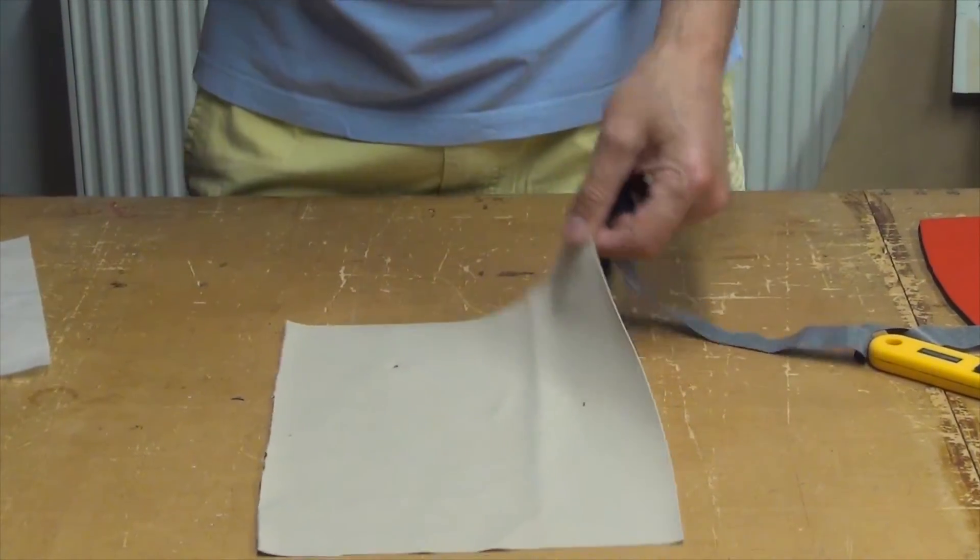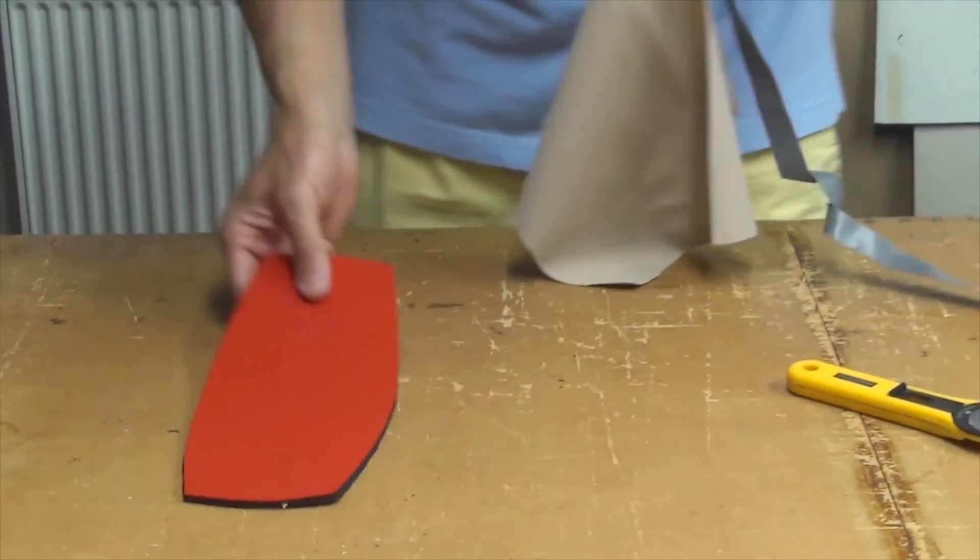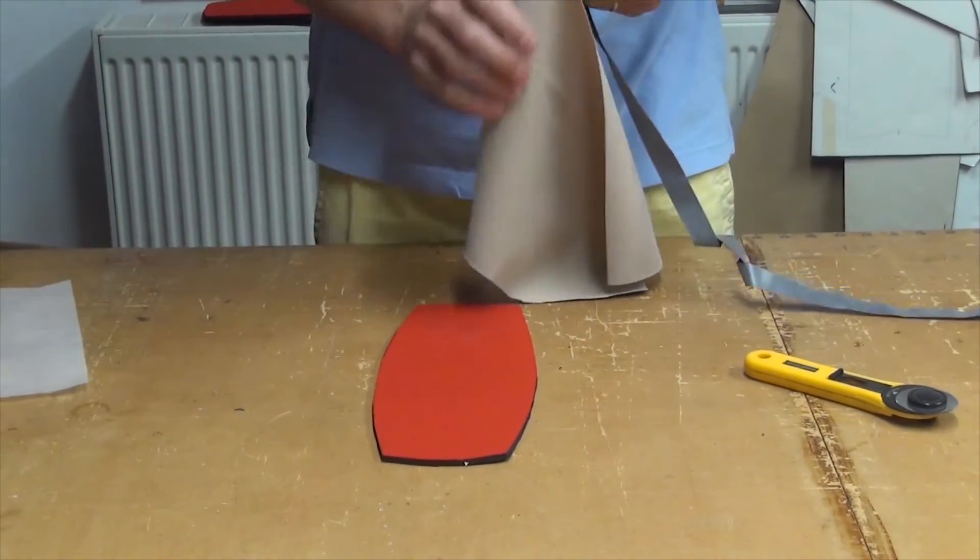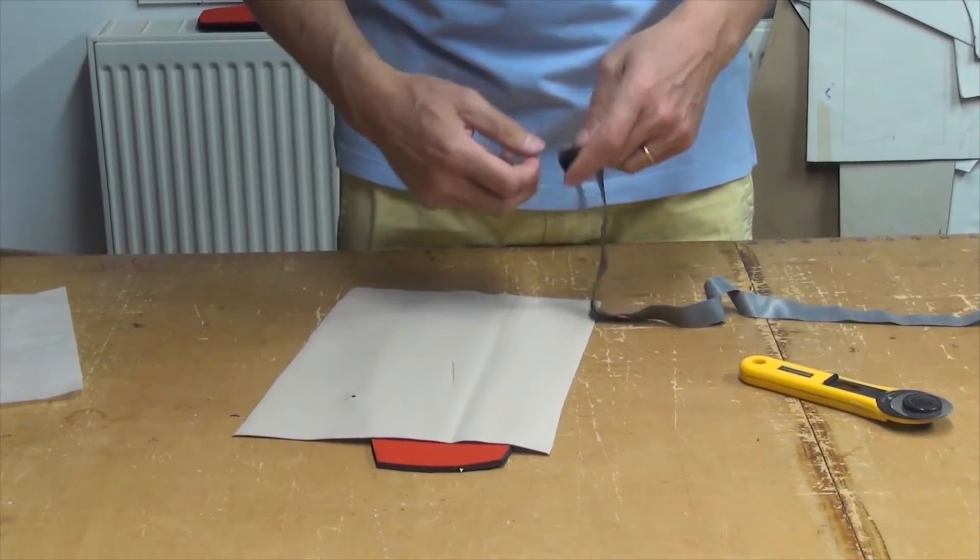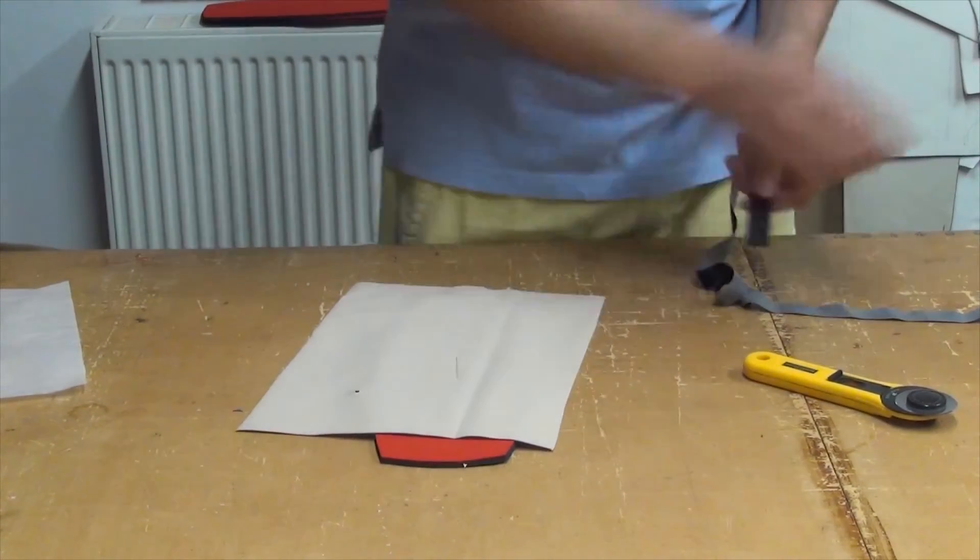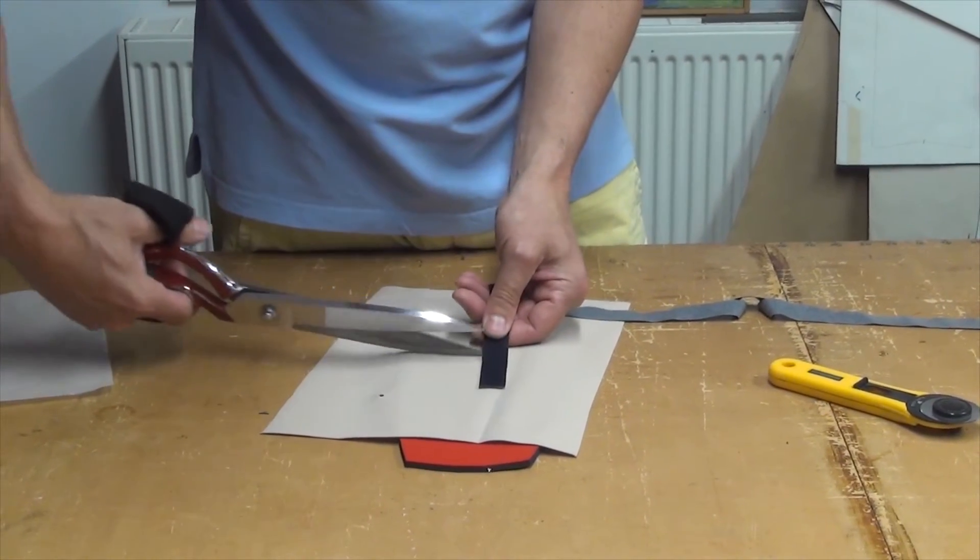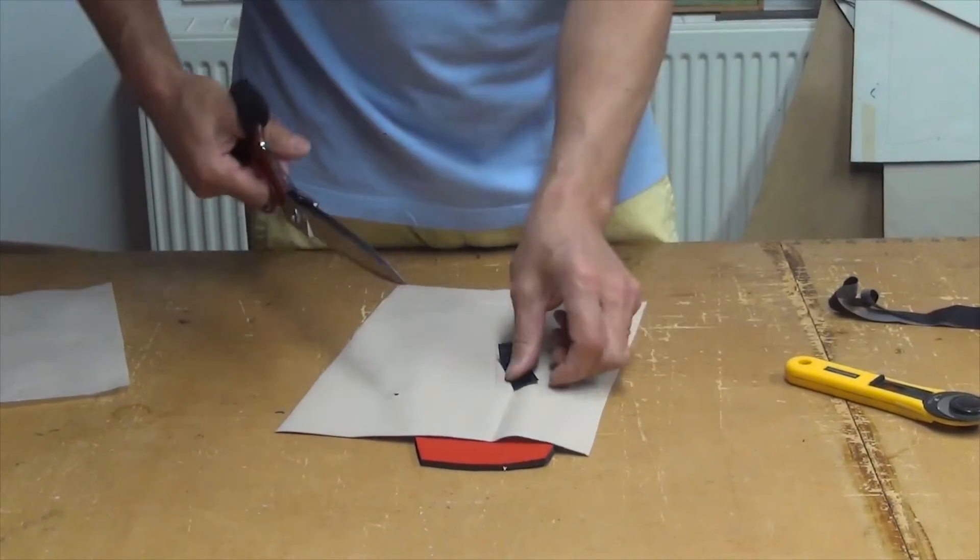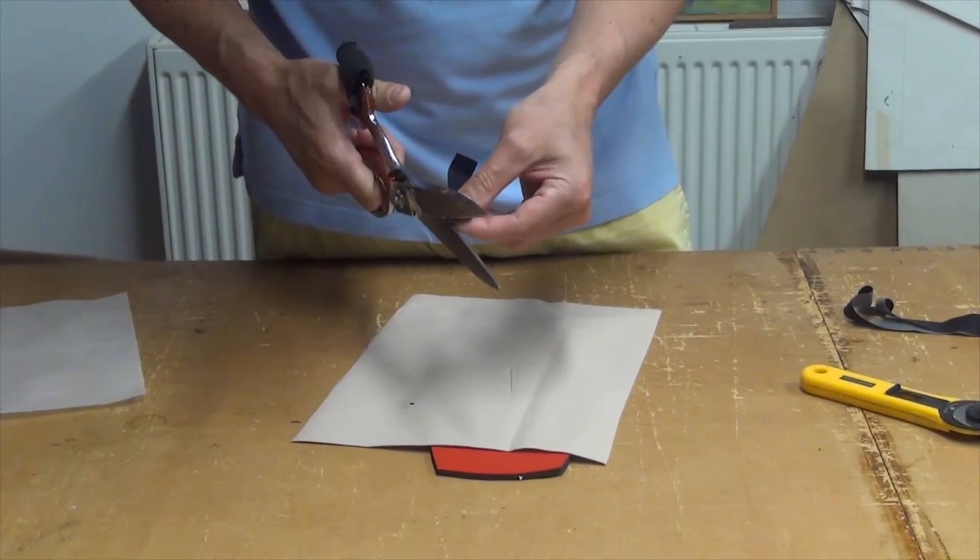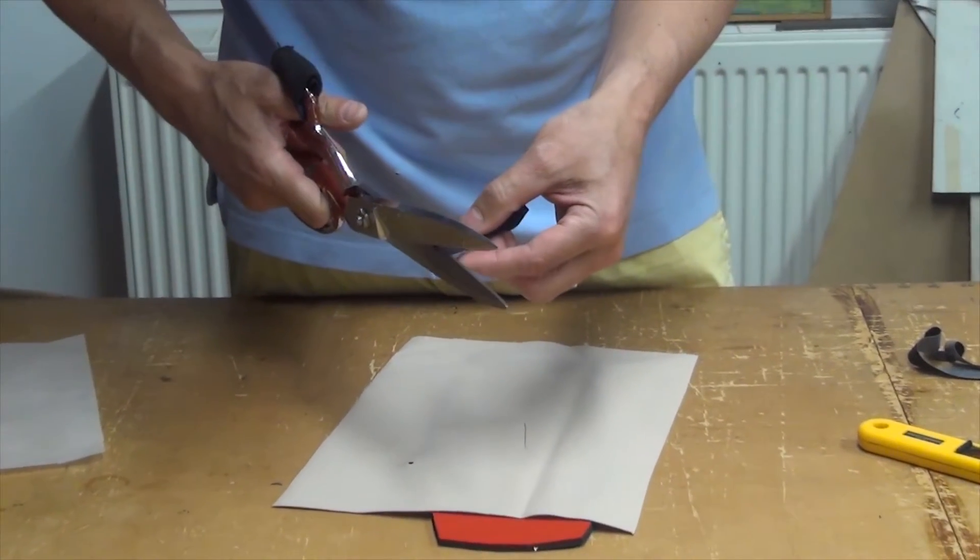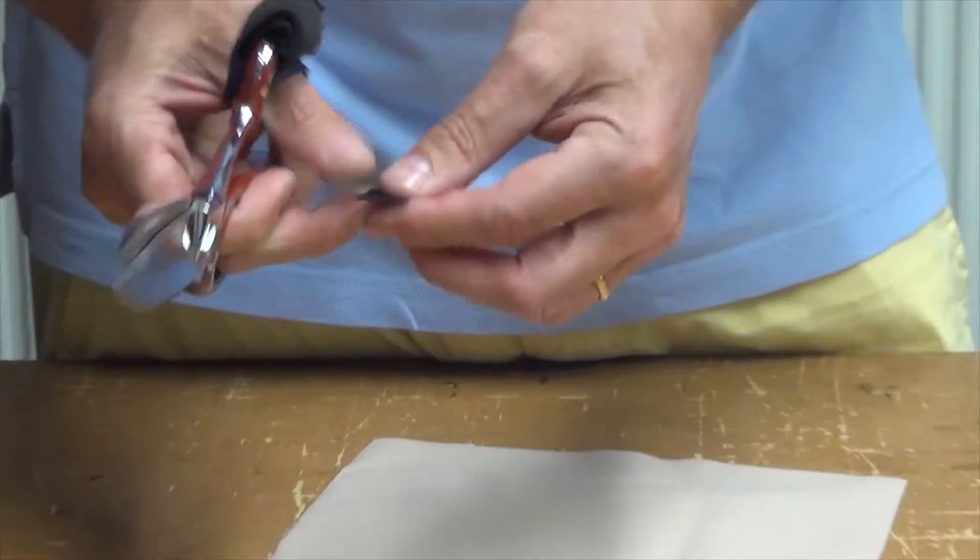So first of all get a spongy mat. We're using a piece of neoprene here. You could use a tea towel. Lay the repair out in front of you and we're going to cut a piece of repair tape just a little bit longer than the slit itself. And I'm also going to round the corners off just so that they stay nice and flat when the repair is done.